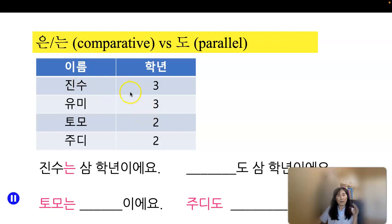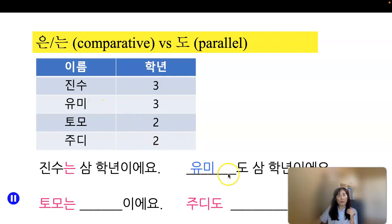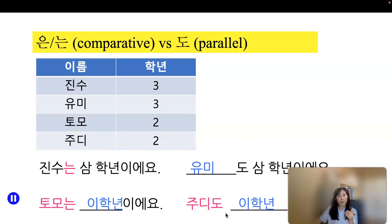I have a table comparing four persons in terms of their school year. 진수는 3학년이에요 — 진수 is a junior. Next, find someone who is also 3학년 — you see particle 도 here. 유미도 3학년이에요 — Yumi is also a junior. How about Tomo? 토모는 2학년이에요 — sophomore. How about Judy? Judy is also 2학년. When you compare, always refer to the immediately preceding person. So 주디도 2학년이에요 — Tomo and Judy both are sophomores.